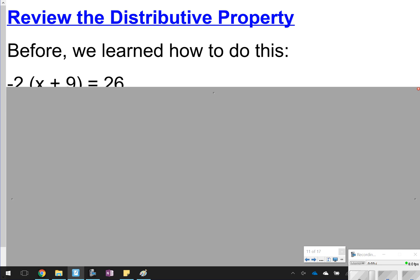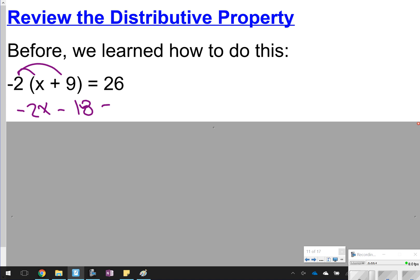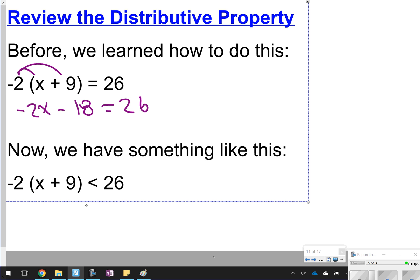The next part is we're going to talk about the distributive property. So remember we've seen this before. We learned this in chapter 3, where we are distributing the number and then solving using two steps. The only difference in this chapter is we see these inequality symbols. So we're still going to be using the same type of steps or the same mechanisms here.